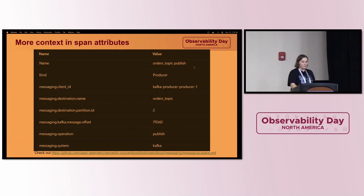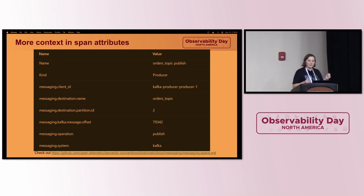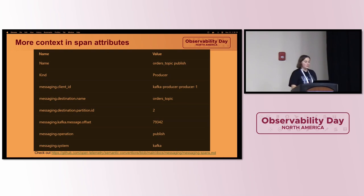Additional context on spans includes the client ID — the only correlation you get between the Kafka side and the OpenTelemetry side — along with partition ID, consumer group, message offset, and message key. Based on this, you can build your own queries, alerts, and dashboards.